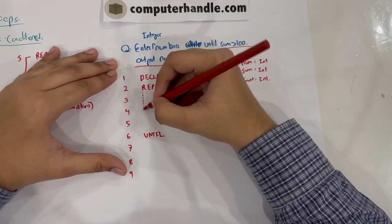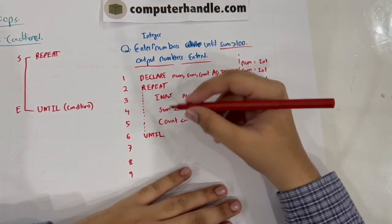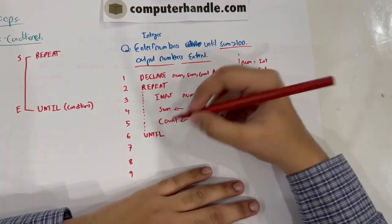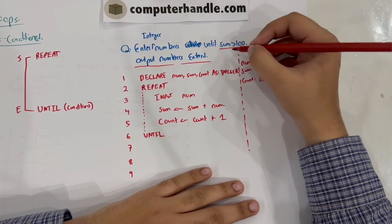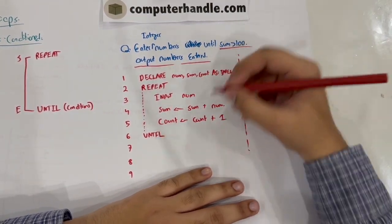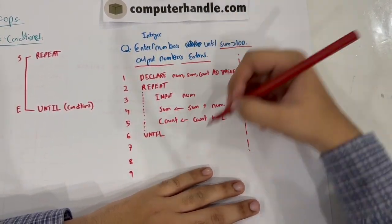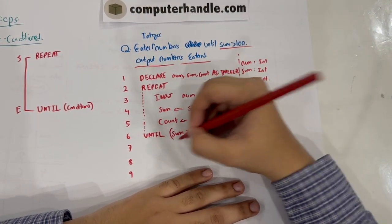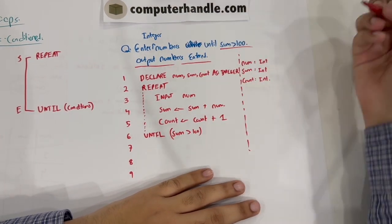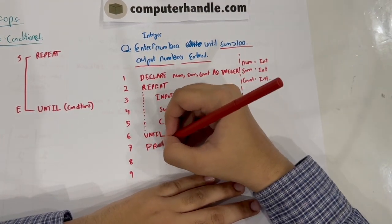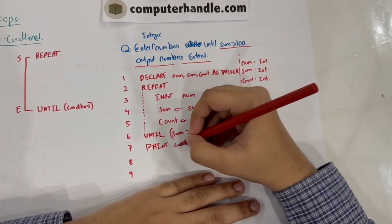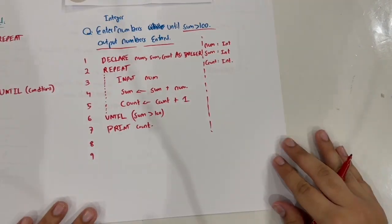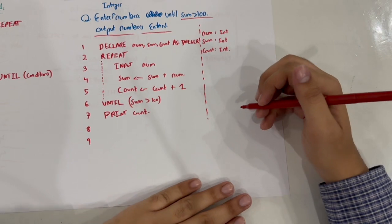Now we write the 'until' part. To help us understand, we'll add some dotted lines. So 'repeat' — this bunch of code — 'until sum is greater than 100'. We keep the loop repeating until sum reaches or exceeds 100. After the loop, we write 'print count' to output the number of entries. That's the code complete.